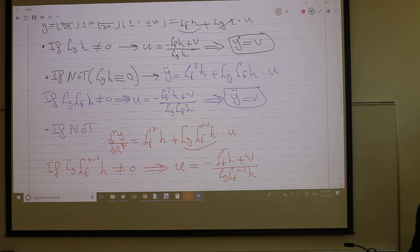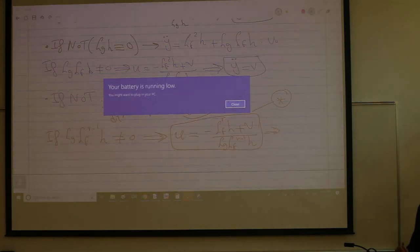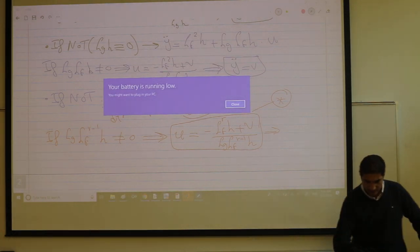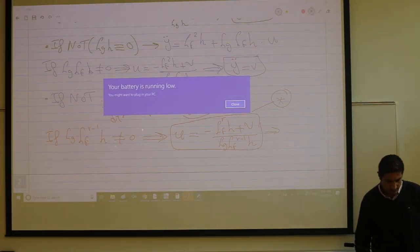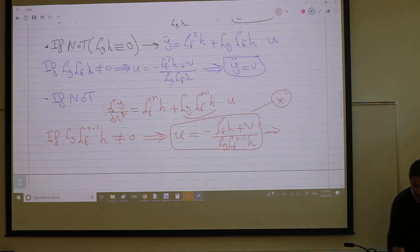So negative L_f^r h plus v divided by this guy. And I will use this many times, so I will call this the r-th law star. This results in the r-th derivative to be just v.